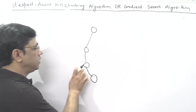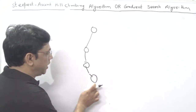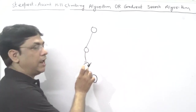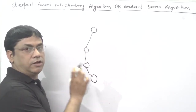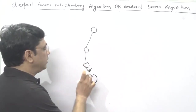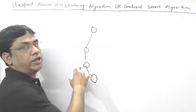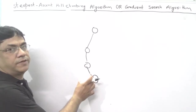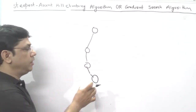But in the Steepest Ascent Hill Climbing Algorithm, you check the current node against all of its neighboring nodes. If you find any best node where the heuristic cost is less, you make that node the current state and move ahead. This is the difference between the Steepest Ascent Hill Climbing Algorithm and the basic hill climbing algorithm.